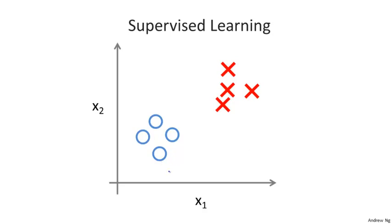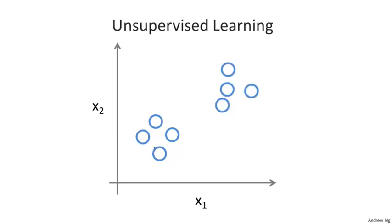In unsupervised learning, we're given data that looks different — data that doesn't have any labels, or that all has the same label, or no labels. So we're given the data set and we're not told what to do with it, and we're not told what each data point is. Instead, we're just told: here is a data set. Can you find some structure in the data?